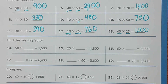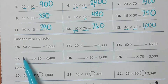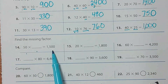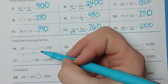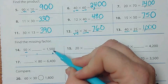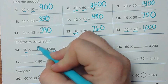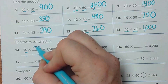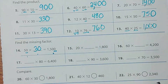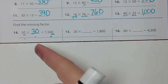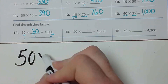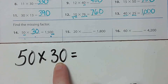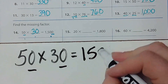Let's look at problems 14 through 19. Number 14: 50 times a number equals 1500. There are two zeros here, so I need one zero to go elsewhere — 15 times what equals 15? Three. So 50 times 30 is 1500. Let's double-check: 5 times 3 is 15, and we have two zeros. Correct.